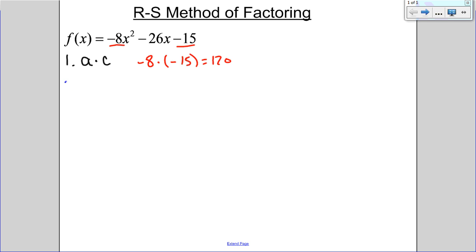Why we call it the RS method is really step 2, that I need to find R and an S, two values that multiply to that 120, but at the same time, I have to add to my B term. My B term in this case is negative 26.